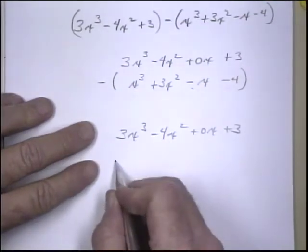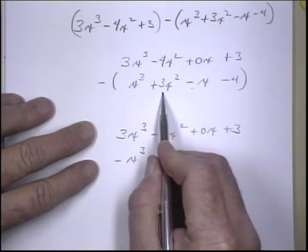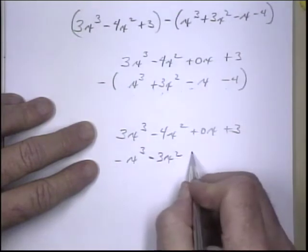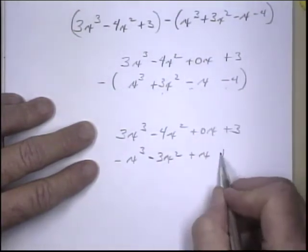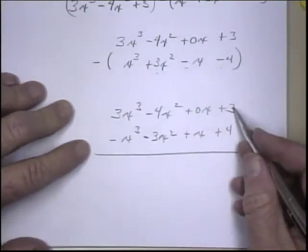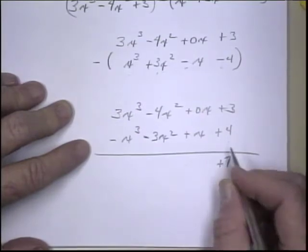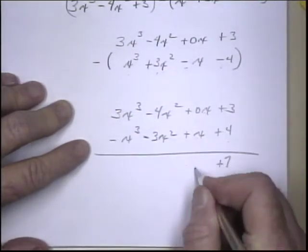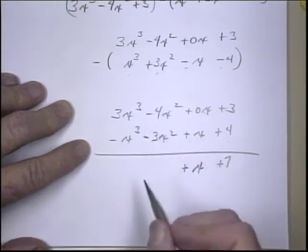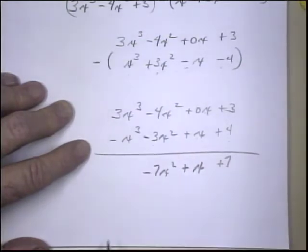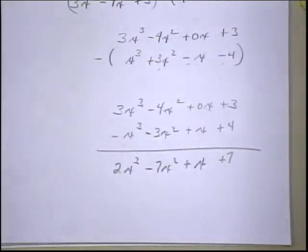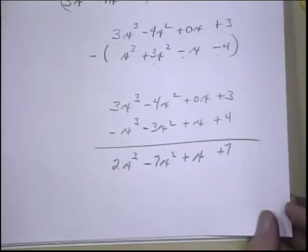So instead of having a positive x³, I have minus x³. Instead of having a positive 3x², I have minus 3x². Instead of having minus x, I have positive x. And minus 4 becomes positive 4. Now I can add these together — just add the columns. 3 and 4 is 7. x and 0x is x. Minus 4x² minus 3x² is minus 7x². And 3x³ minus x³ is 2x³. That was vertical subtraction.